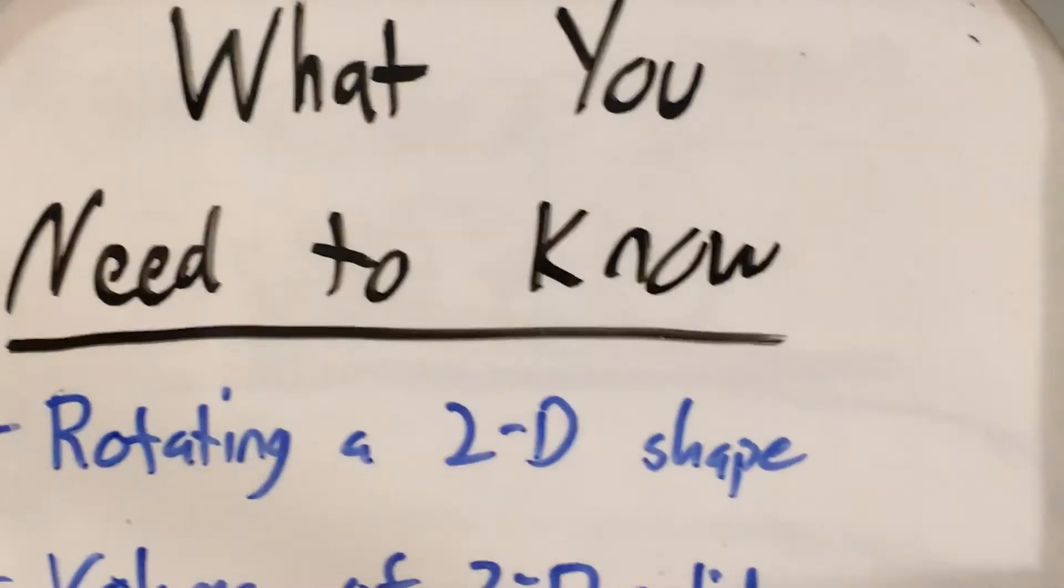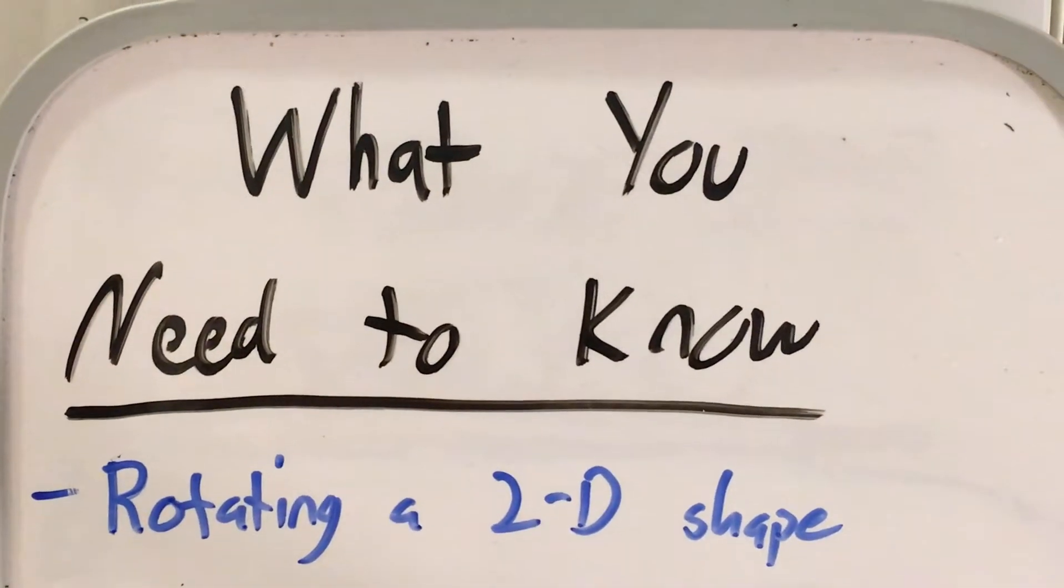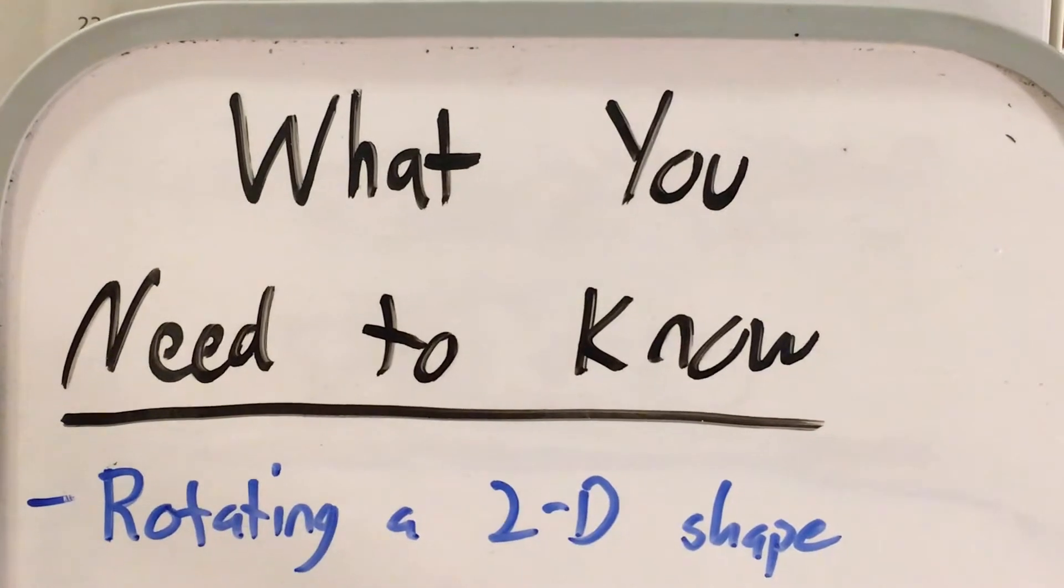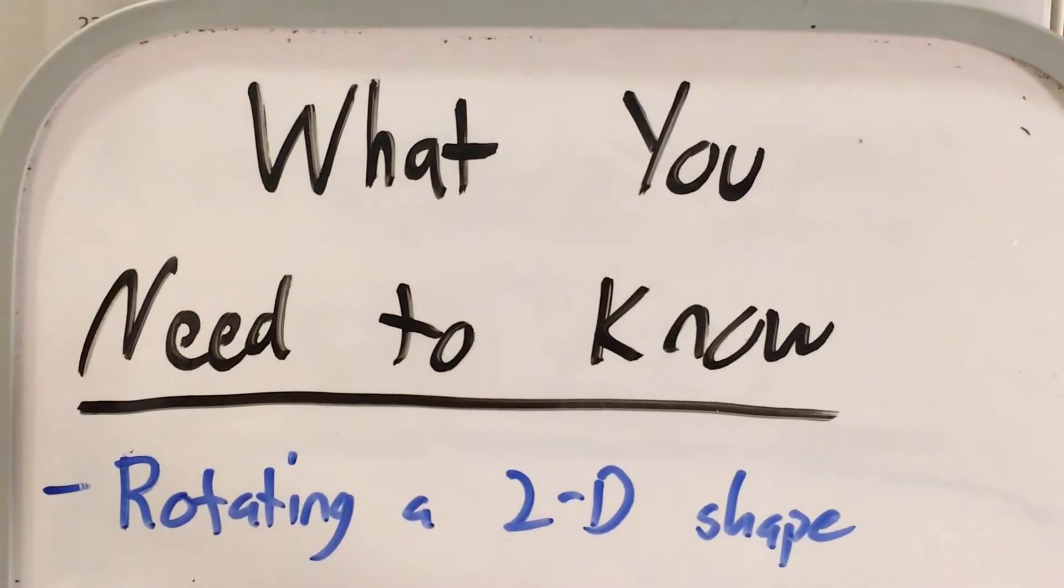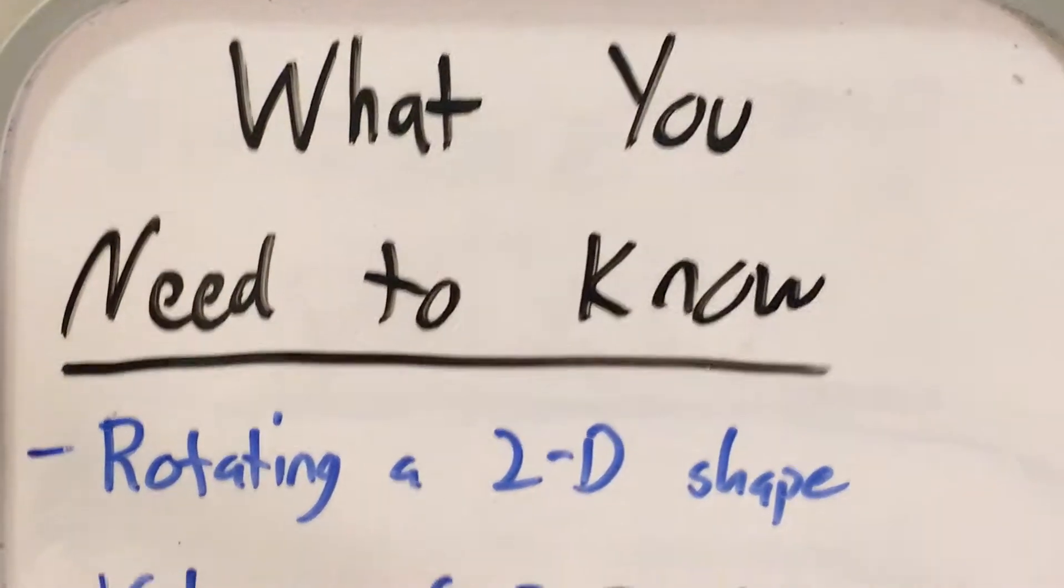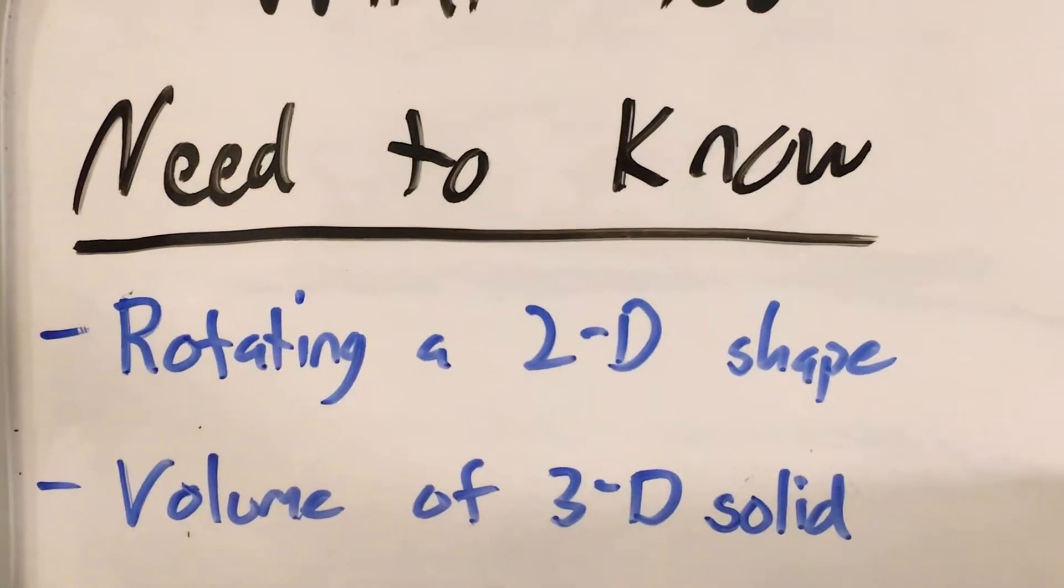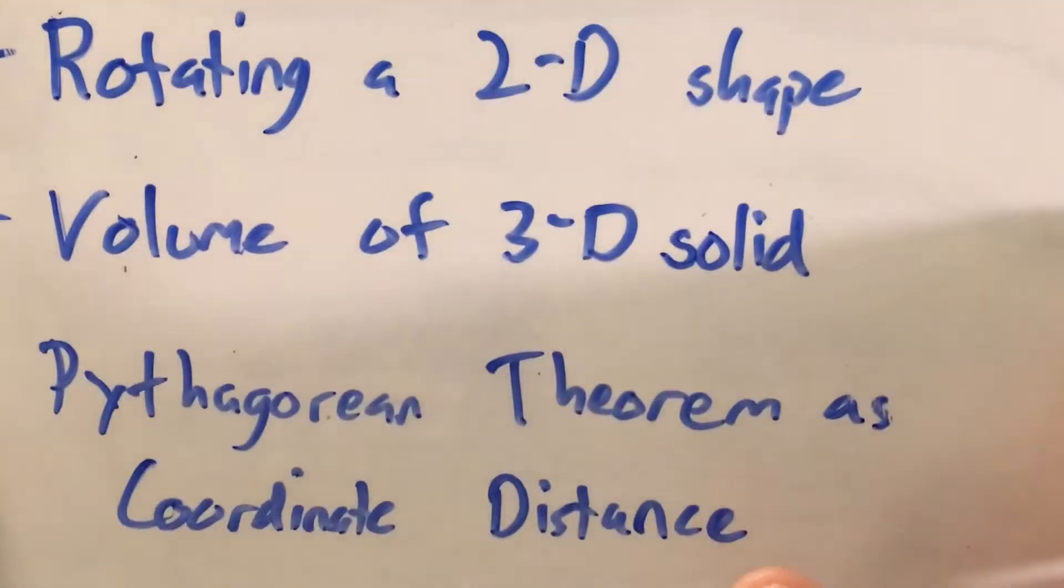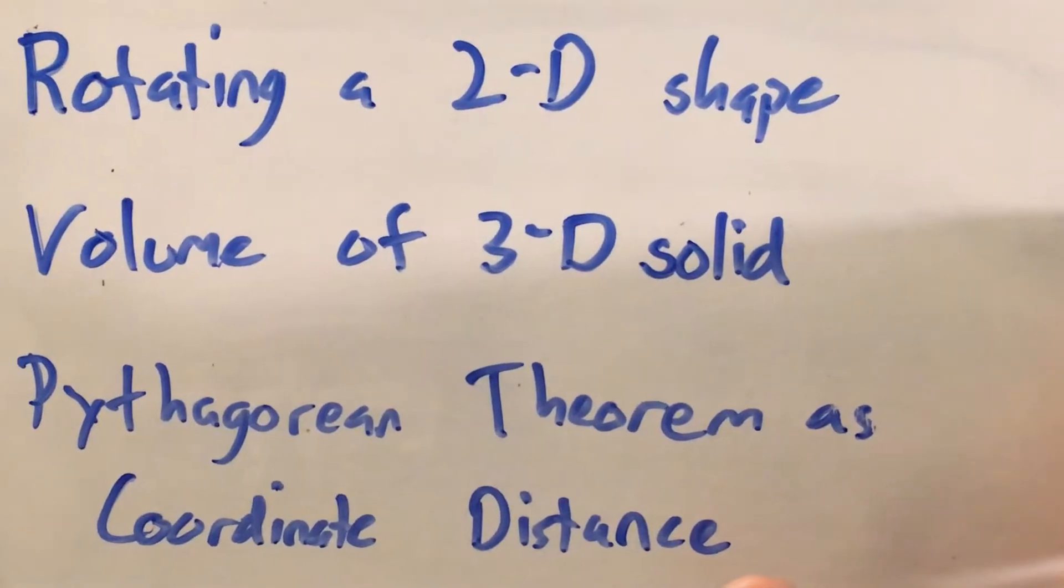Now this is going to test us on a really weird geometry concept to get if you're not already a visual thinker, and that's rotating a two-dimensional shape around a line. We'll also have to use a formula for the volume of a particular 3D solid, and we'll have to use Pythagorean theorem as coordinate distance.